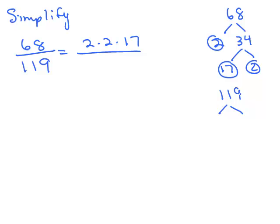Does 2 go into it? No. Does 3? No, because when you add the digit you get 11 and 3 does not go into 11. Next prime number is 5. Doesn't end in 0 or 5. The next number is 7.